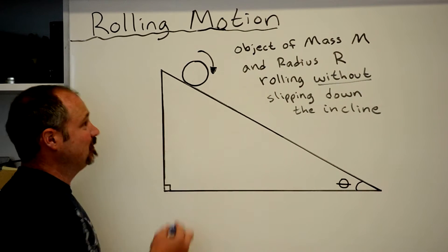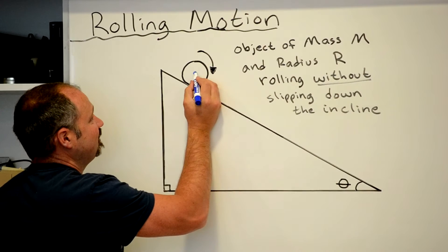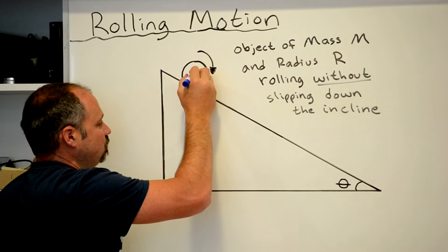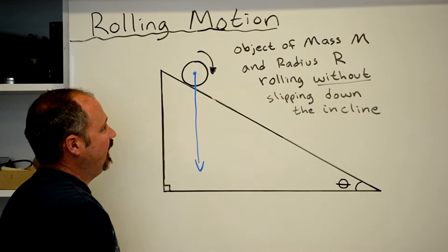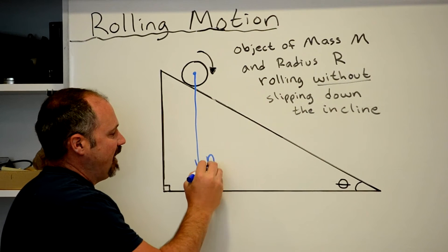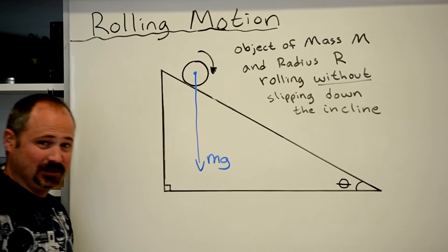It has mass. Therefore, the force of gravity is acting on it. And that points straight down towards the center of Earth. And the force of gravity is simply the mass times the acceleration of gravity, mg.